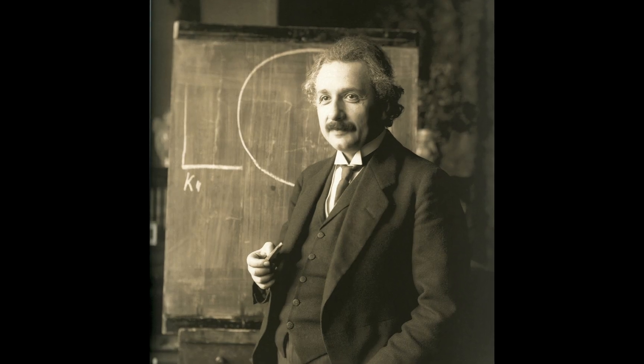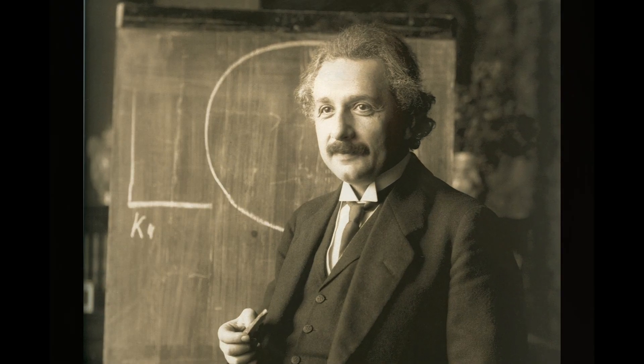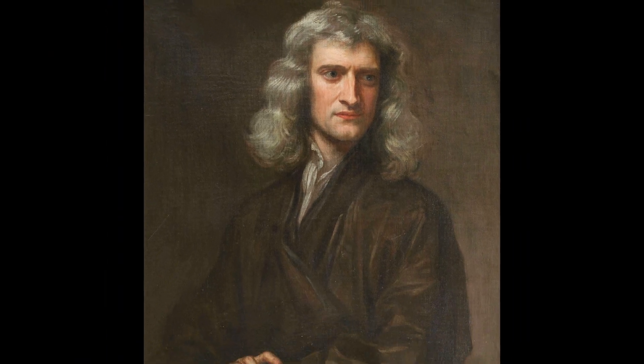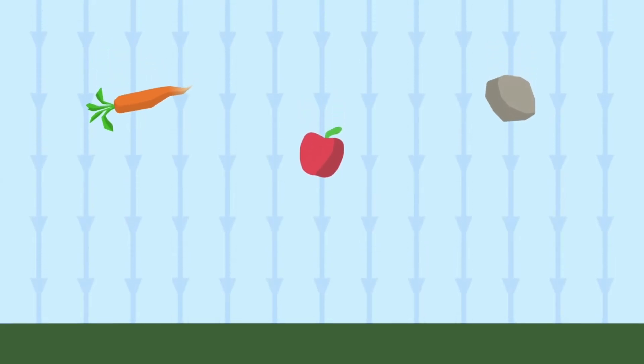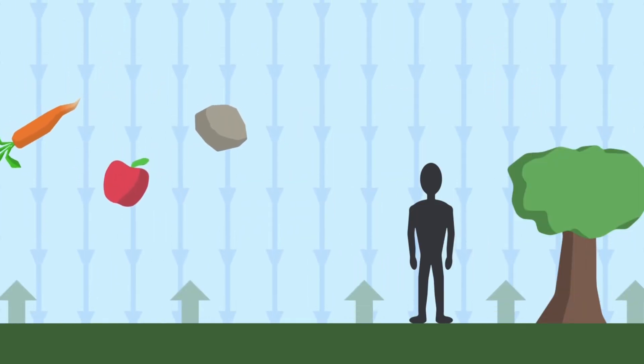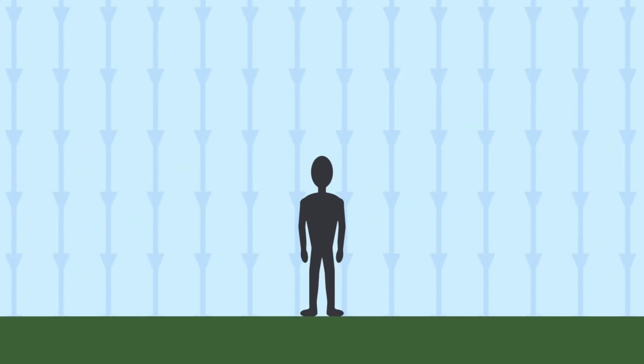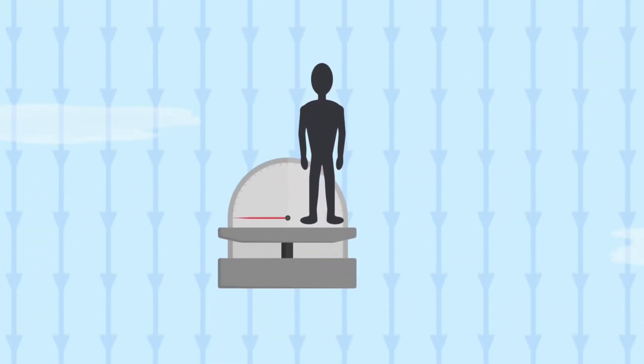Before Einstein, our understanding of gravity was primarily based on Isaac Newton's laws. In this view, every mass exerts an attractive force on every other mass. The more massive the objects and the closer they are to each other, the stronger the force.